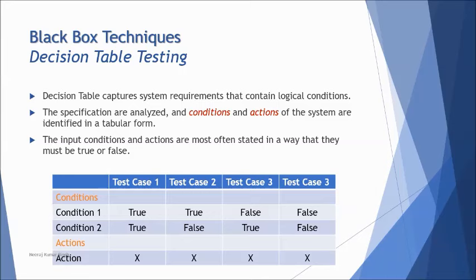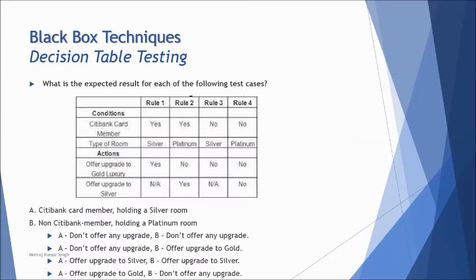Let's quickly look at one example to understand this better. In the examination, you'll be provided with the table — you don't really have to prepare it yourself, because it's at K3, not K4. Here's a table giving you understanding about: if you are a member holding some type of room, we have different offers for you. The question is: what is the expected result for each of the following test cases?